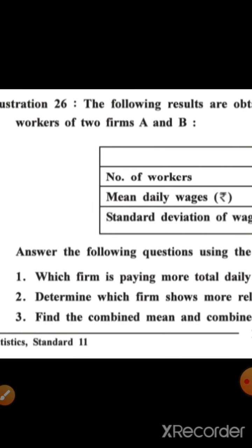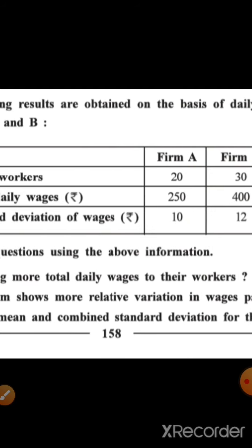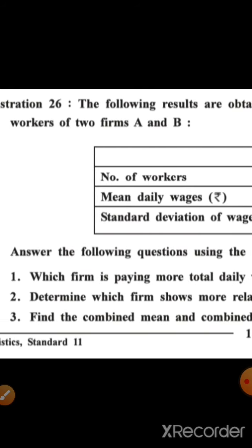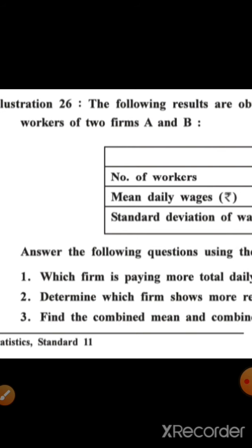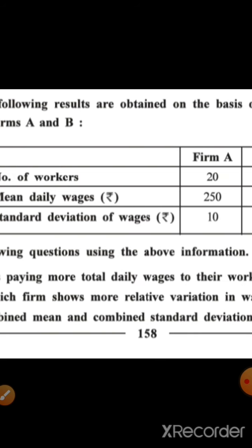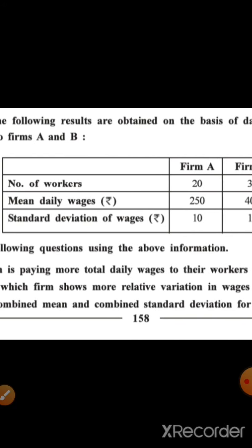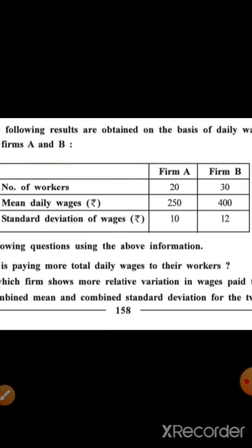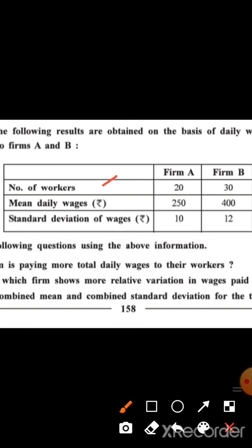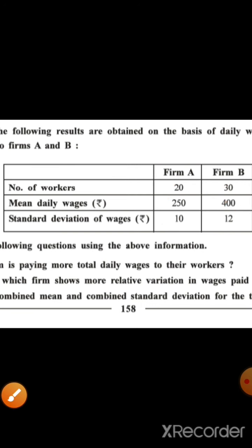Come to Example Number 26. The following results are obtained on the basis of daily wages paid to the workers of two firms, A and B. The number of workers is 20 for Firm A and 30 for Firm B. The mean daily wages are ₹250 for Firm A and ₹400 for Firm B. The standard deviation of wages is ₹10 and ₹12 respectively.